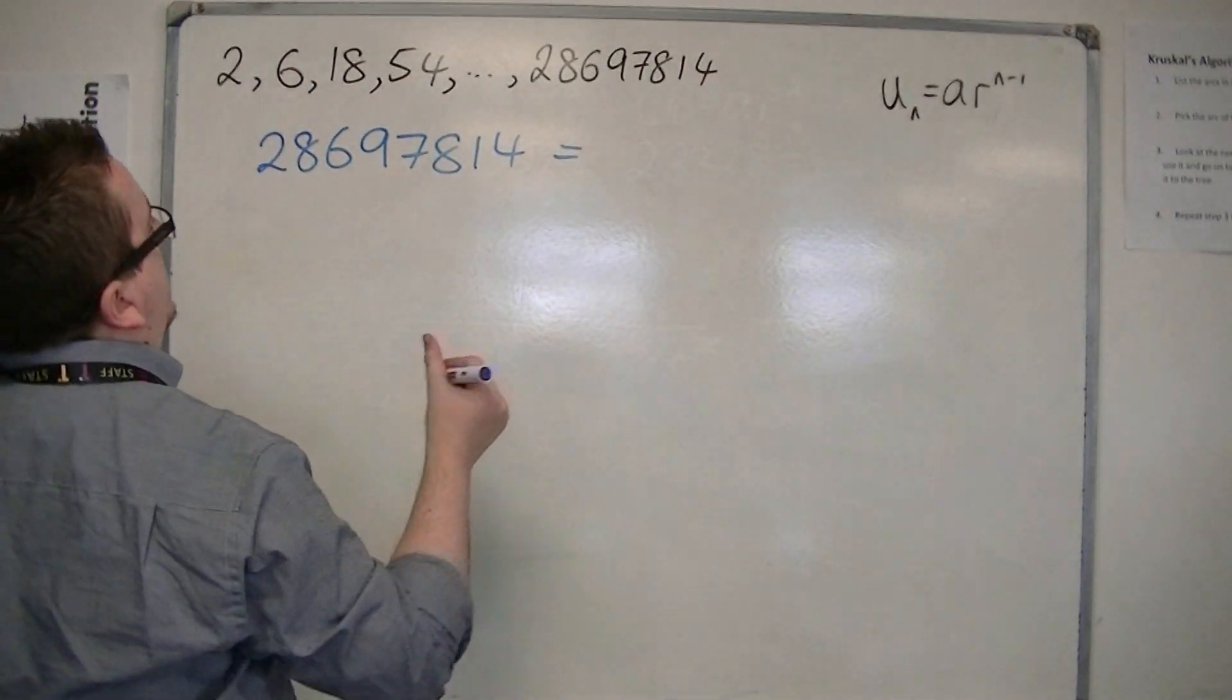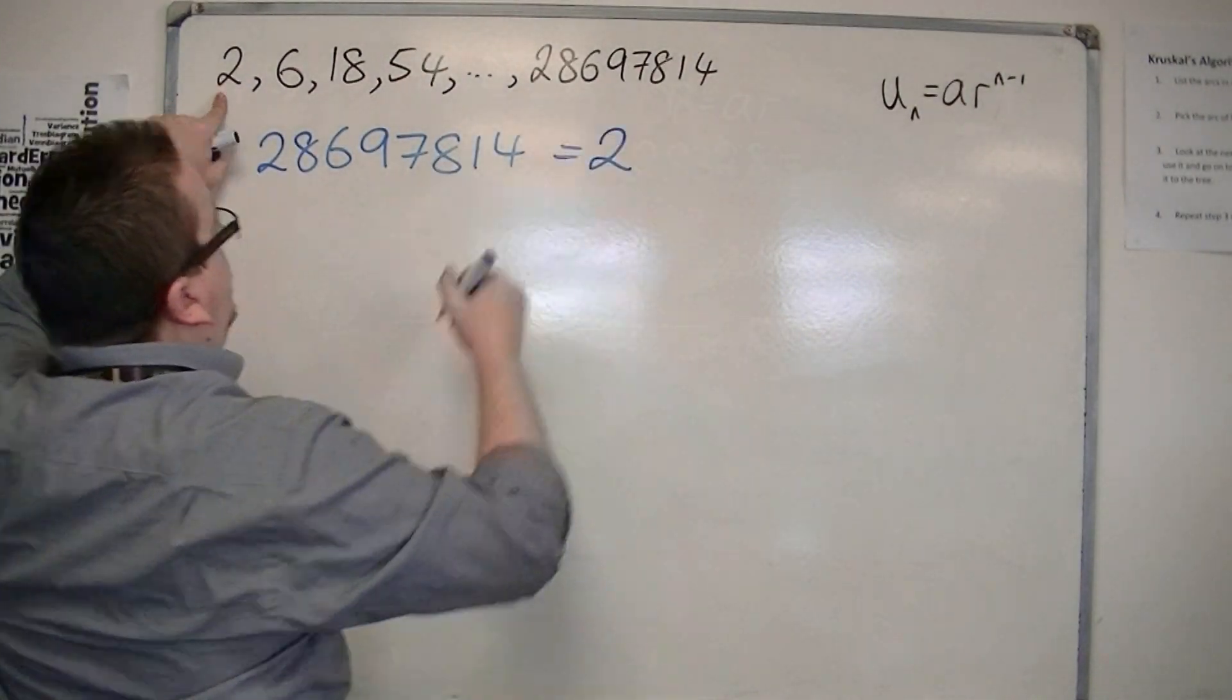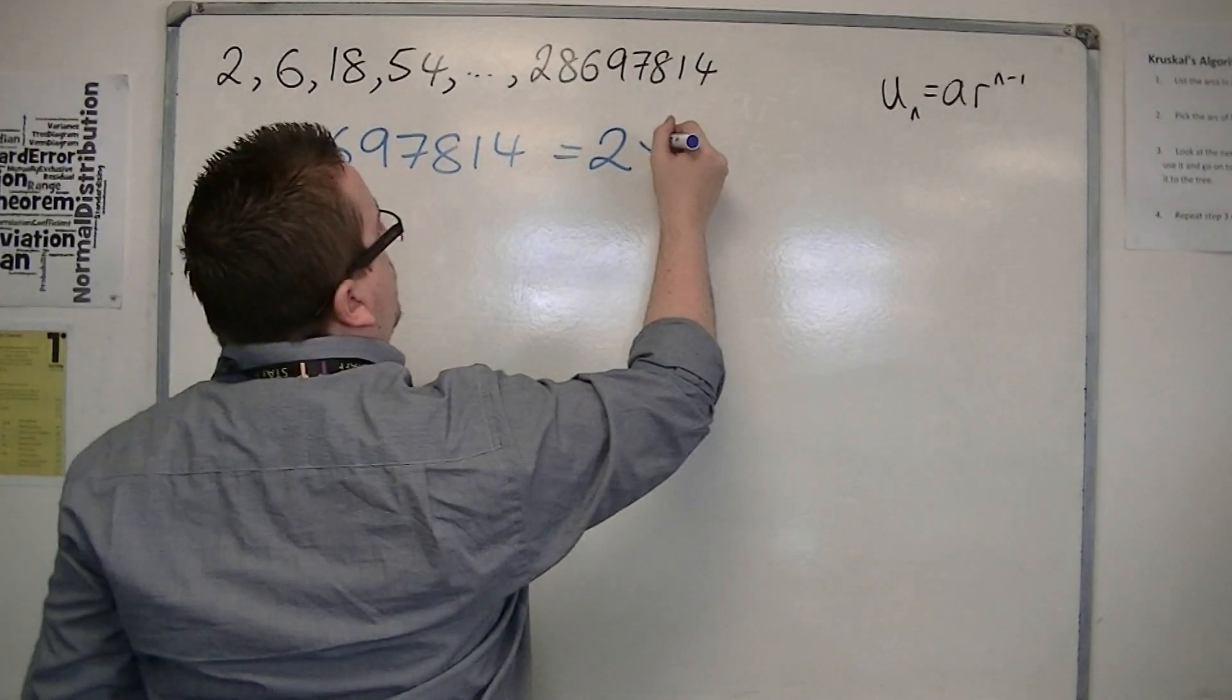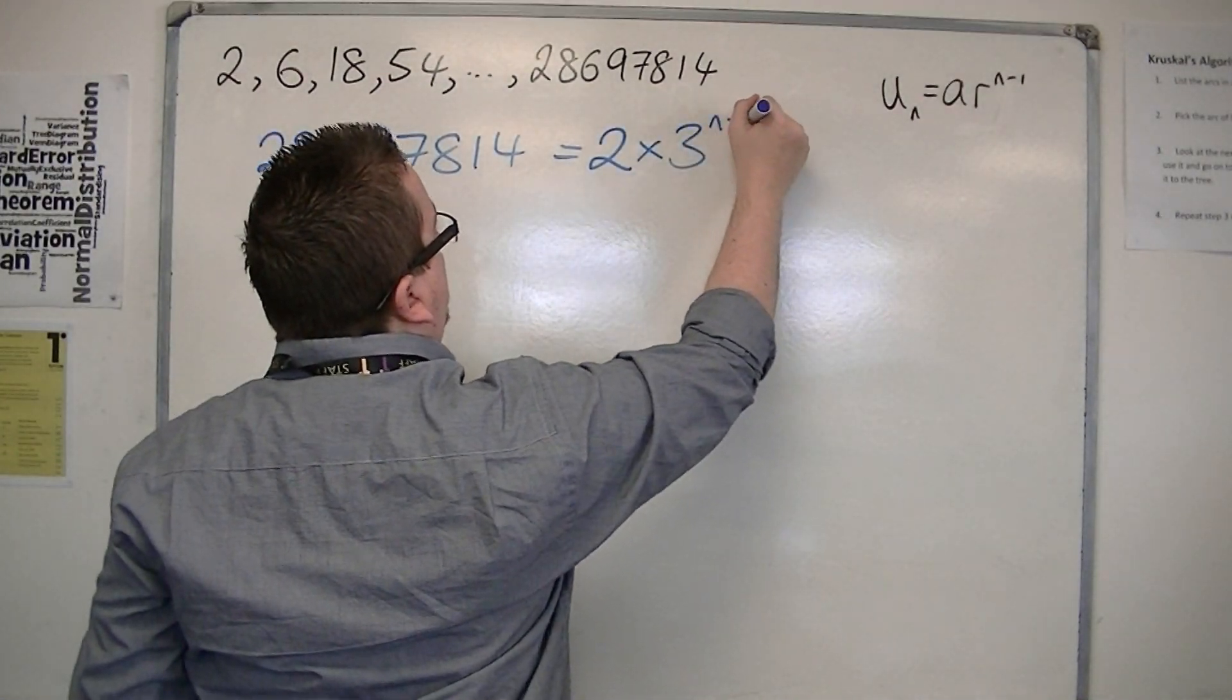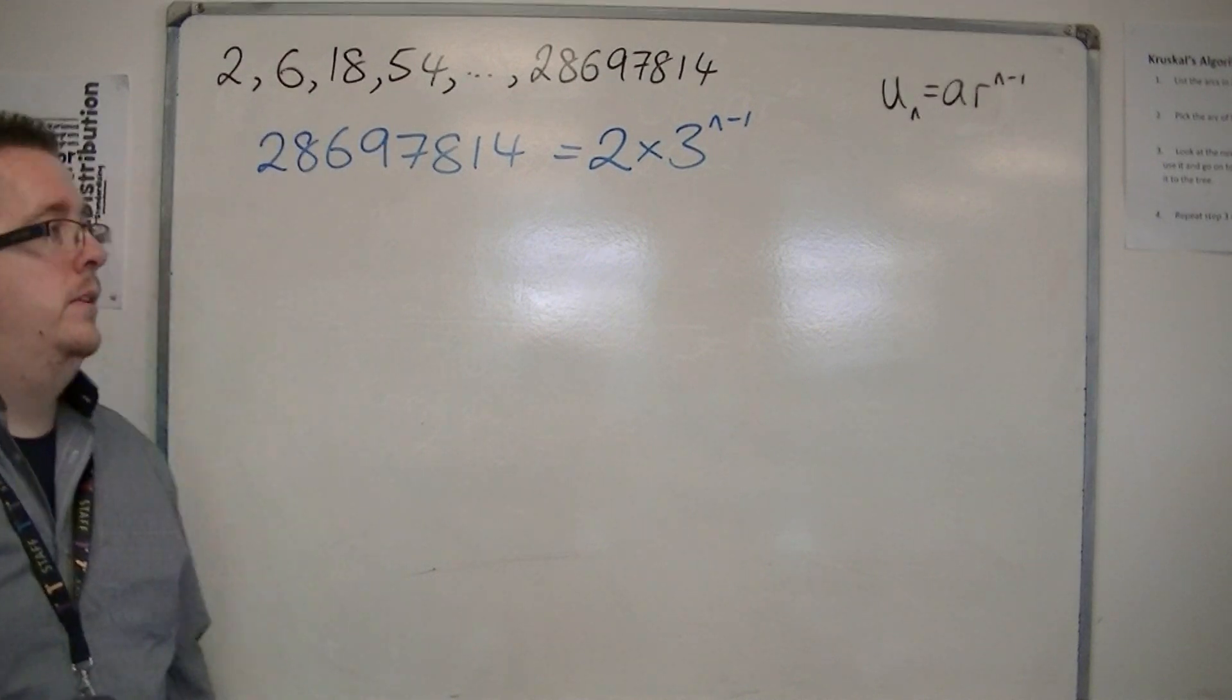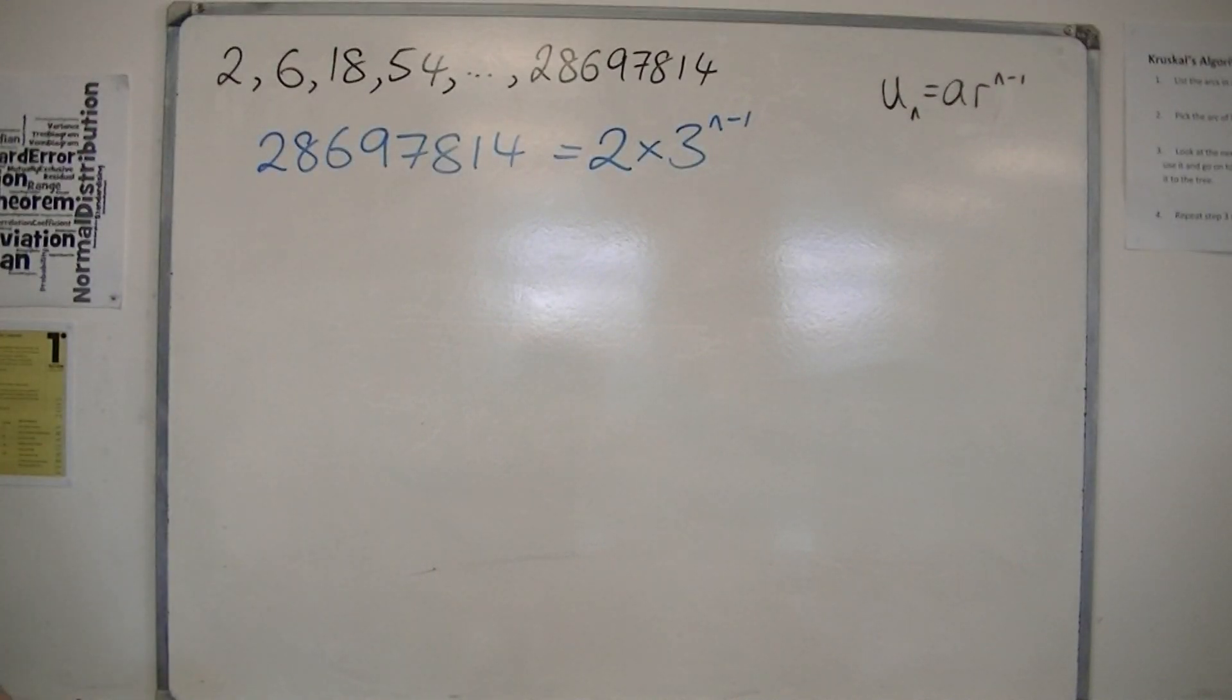r, to the n minus 1. So, the first term is 2, and then the common ratio is 6 divided by 2, which is 3, so 3 to the n minus 1. And what I want to do is I want to work out what the n is. So, this is an equation I want to solve.